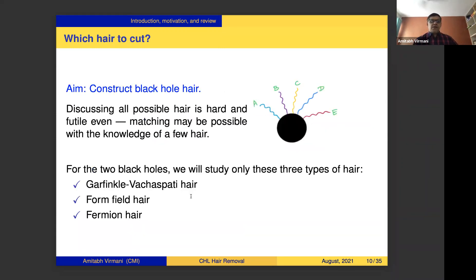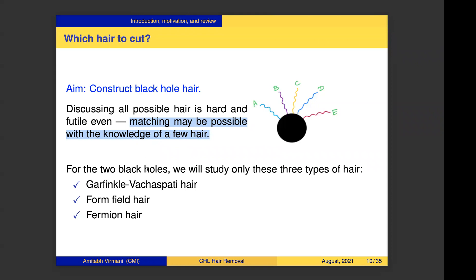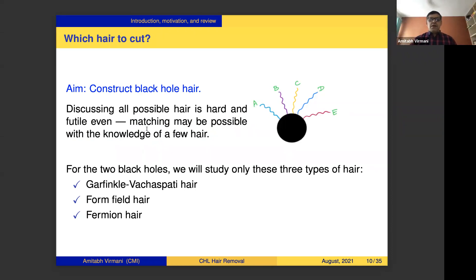The aim is to construct black hole hair and determine which hair to cut or remove. Discussing all possible hair is hard — it's not even known how to have such a discussion. We will construct a specific class of hair and show that matching happens only with this class. By matching, we mean that the 4D and 5D microscopic indices are not the same, and once we remove the hair contribution, the 4D and 5D partition functions agree.